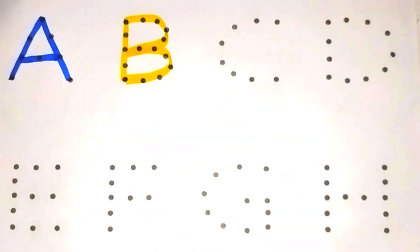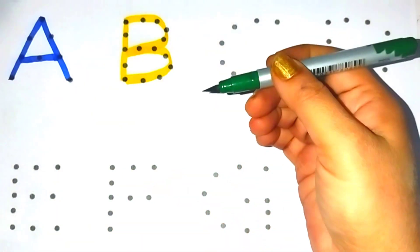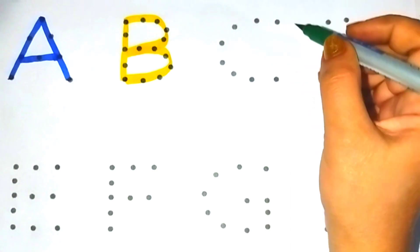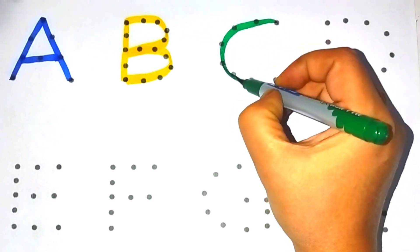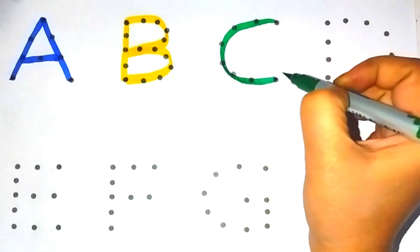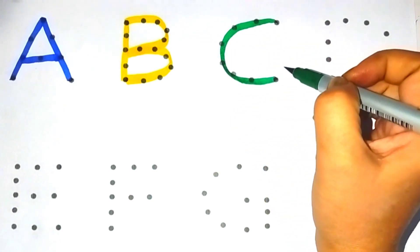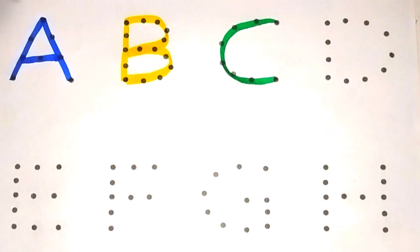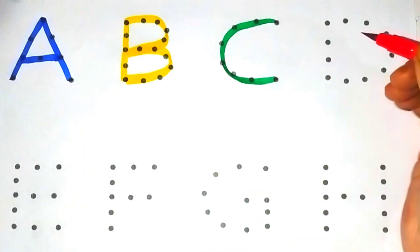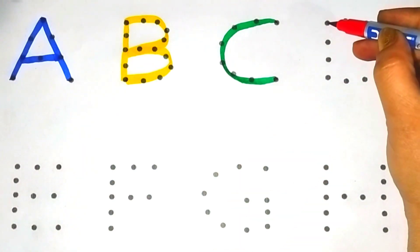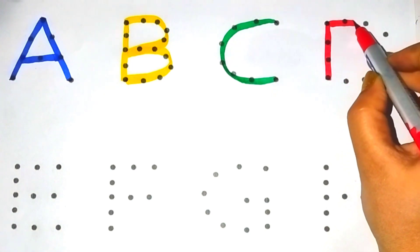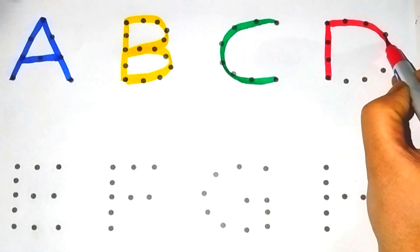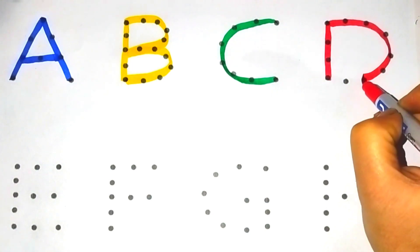Green color. C. C for Cat. Red color. D. D for Dog.